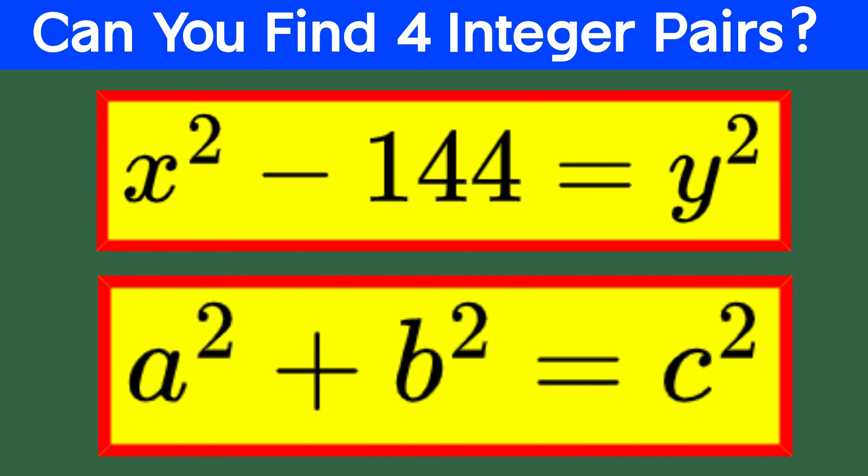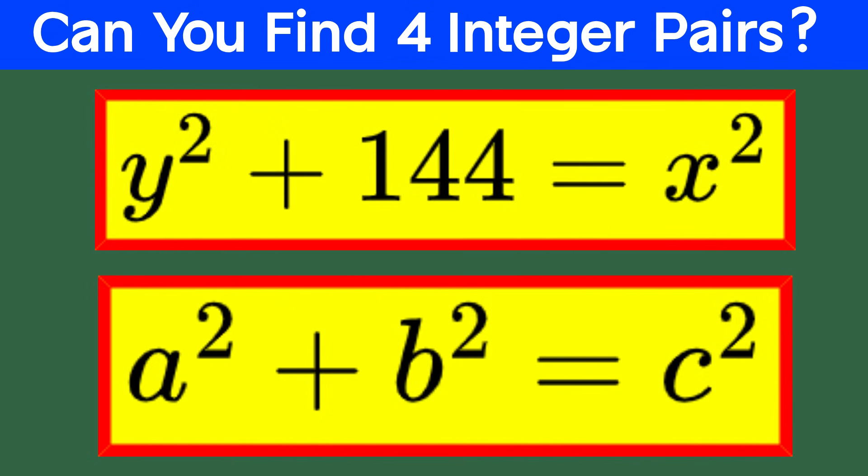To start, let's move the 144 to the other side of the equation. By doing this, we rewrite the equation as y squared plus 144 equals x squared. Now we're starting to see the resemblance to the Pythagorean identity, where something squared plus something equals something squared. It's like reconnecting with an old friend in a new context. But hold your horses, it's not quite there yet.